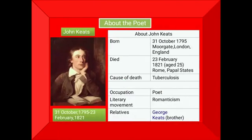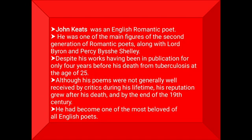First of all, we will know about the famous poet John Keats. John Keats was born on 31 October 1795 and he died on 23 February 1821 at the age of 25. John Keats was an English Romantic poet. He was one of the main figures of the second generation of Romantic poets along with Lord Byron and P.B. Shelley, despite his works having been in publication for only four years before his death from tuberculosis at the age of 25. Although his poems were not generally well received by critics during his lifetime, his reputation grew after his death.